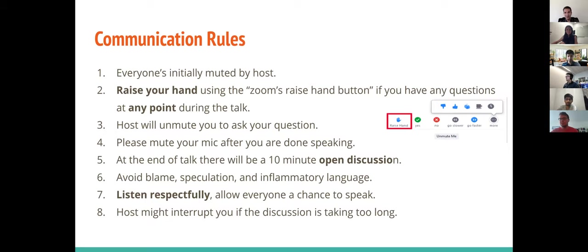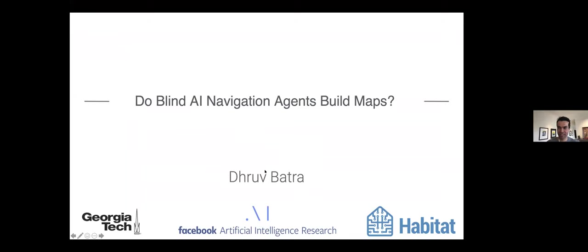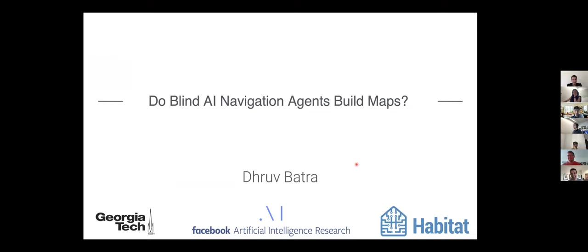His research interest lies in the intersection of machine learning, computer vision, natural language processing, and AI. The long-term goal of his research is to develop agents that see, talk, act, and reason. He's a recipient of plenty of different awards, including the Presidential Early Career Award for Scientists and Engineers. We are very happy to host him here today.